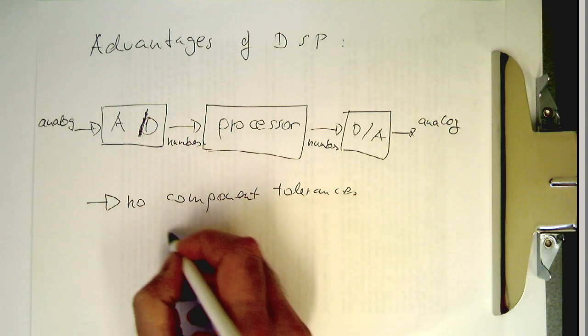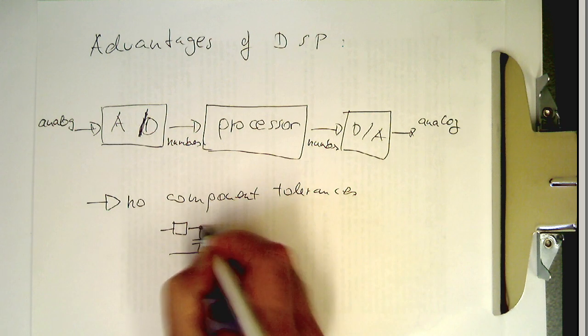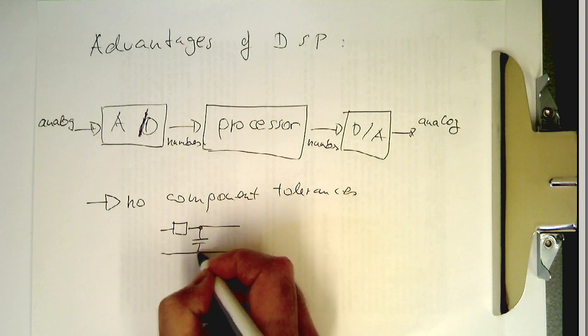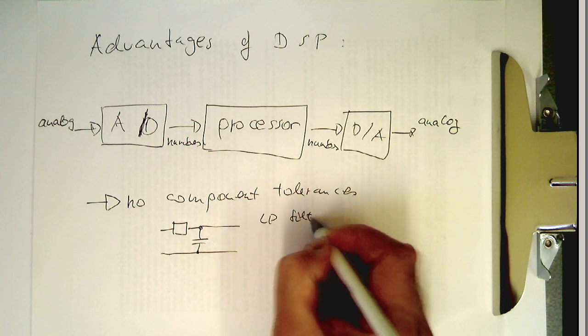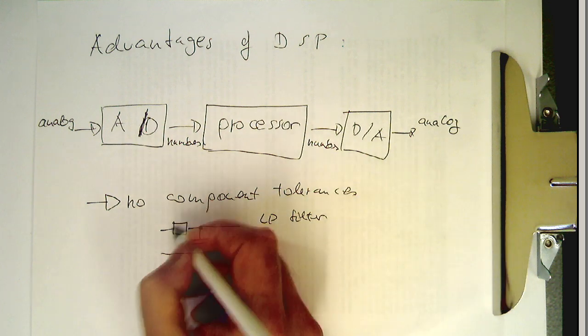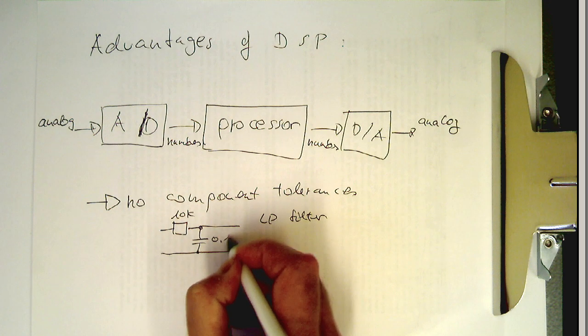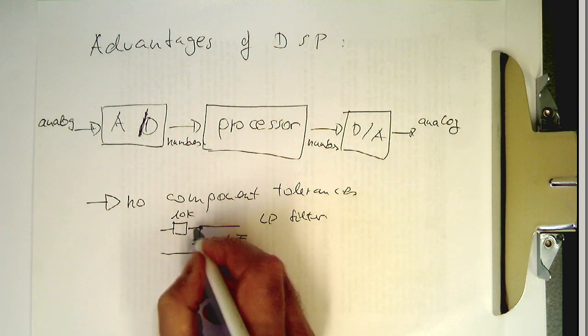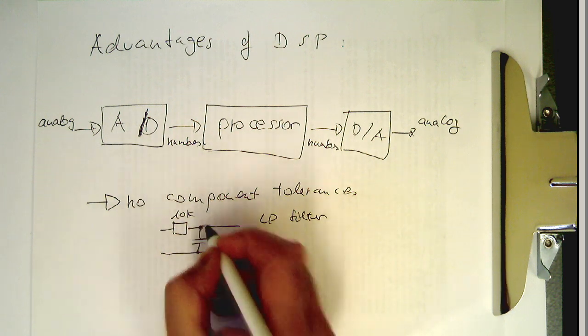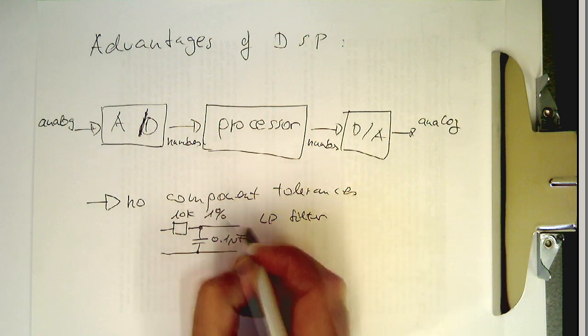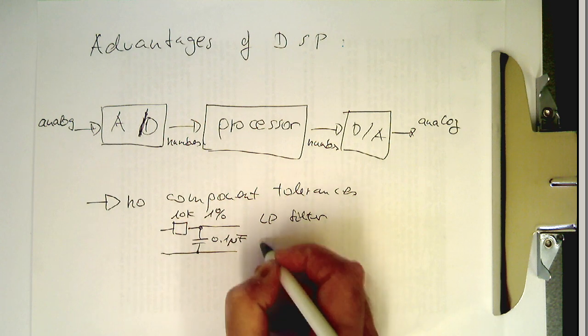Imagine, for example, an analog filter. We have something like this as a low pass filter. If we're putting a resistor here, 10k, and let's say 0.1 microfarad, the 10k resistor usually has a tolerance of 1%, and the capacitor has usually quite high tolerances, 5% or 10% or so.